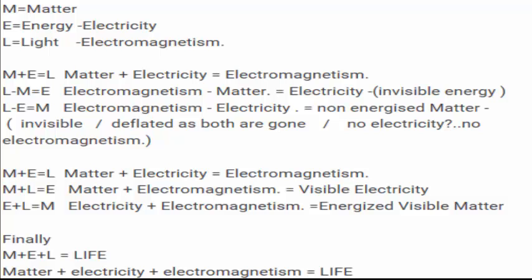Light minus energy equals matter. Electromagnetism minus electricity gives non-energized matter, which is invisible. Why? Because energy inflates matter. So this matter is now non-energized, so it's invisible. It's deflated as both electromagnetism and electricity have gone. No electricity, no electromagnetism, no color, no spectrum, and the matter collapses and goes back to crushed matter.